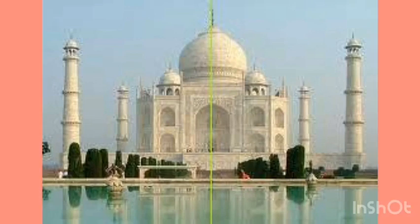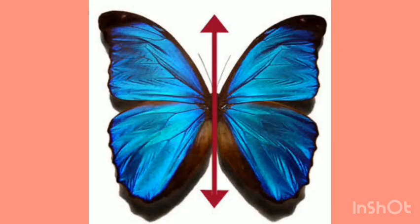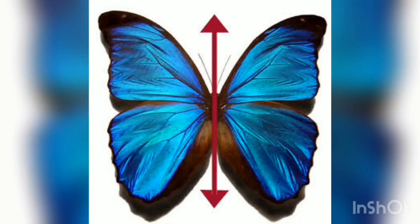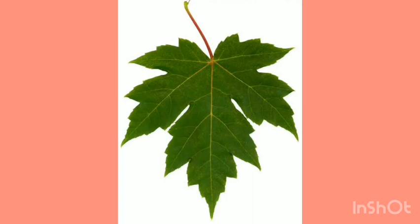Now these are examples from our life. This is a building and the green line is the line of symmetry — the right part is the mirror image of the left one. Similarly, this butterfly is also symmetrical because the right wing is the mirror image of the left one. This leaf is also symmetrical because the line running in the center is the line of symmetry and both parts are the mirror image of each other. I hope you understand and enjoy the video. Allah Hafiz.